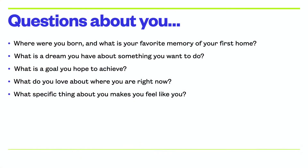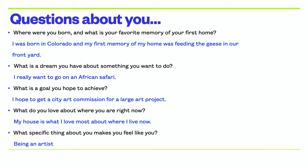To begin, please take out one of those pieces of paper and answer these five questions. Number one: where were you born and what is your favorite memory of your first home? Number two: what is a dream you have about something you want to do? Number three: what is a goal you hope to achieve? Number four: what do you love about where you are right now? Number five: what specific thing about you makes you feel like you? Please write down the answers to each one of those questions.